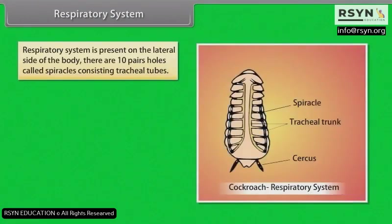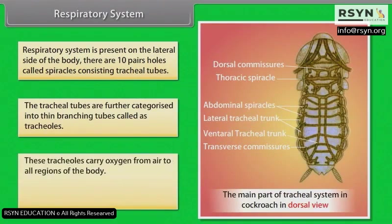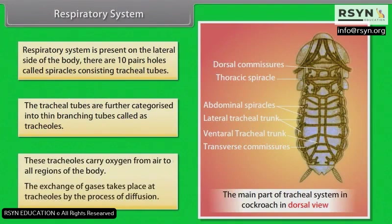Respiratory System: The respiratory system is present on the lateral side of the body. There are 10 pairs of holes called spiracles, consisting of tracheal tubes. The tracheal tubes are further categorized into thin branching tubes called tracheoles, which carry oxygen from air to all regions of the body. The exchange of gases takes place at the tracheoles by the process of diffusion.